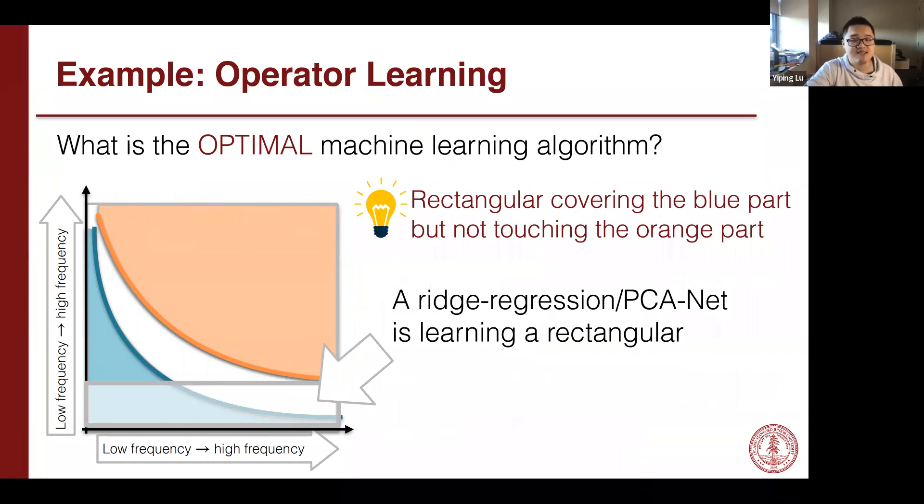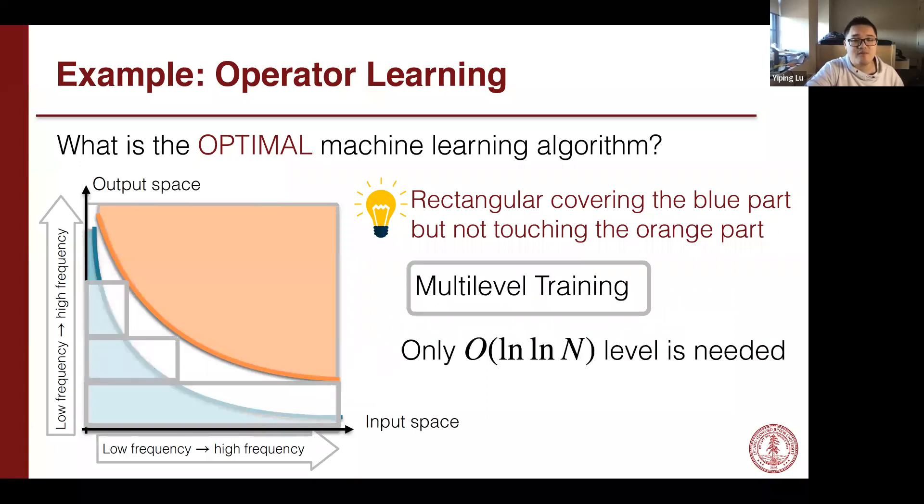Can we know something about the learning algorithm? We discovered that for every well-known machine learning algorithm, for example, ridge regression and PCA or PCA net, it is a machine learning algorithm that learns a rectangular in the figure. If you have a single rectangular, you want to not touch the orange area, but you learn everything in the blue area. So a single ridge regression or a single PCA net is not optimal.